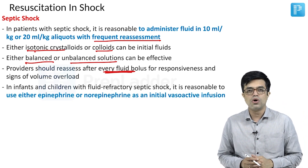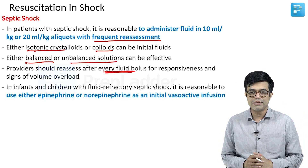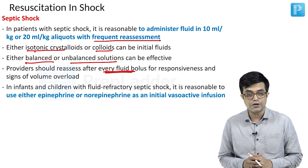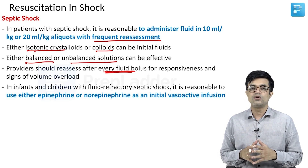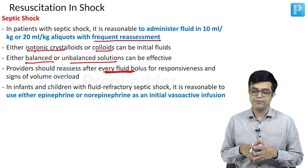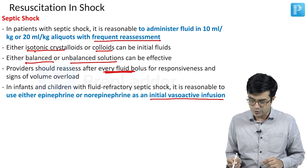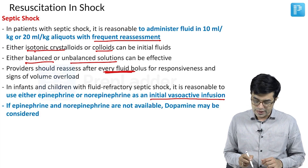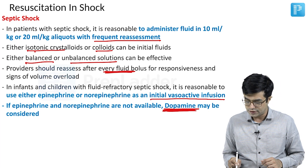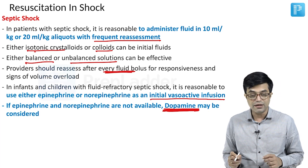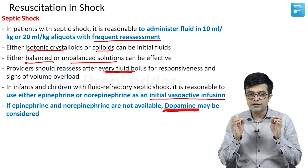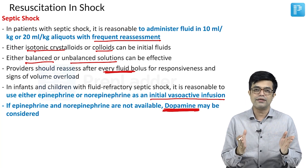In infants and children who do not respond to fluids — called fluid refractory septic shock — you need to consider inotropic agents. The inotropic agents can be either epinephrine or norepinephrine as an initial vasoactive infusion. If epinephrine and norepinephrine are not available, then dopamine may need to be considered. Please be clear that in shock management, dobutamine is not used as a standard therapy.